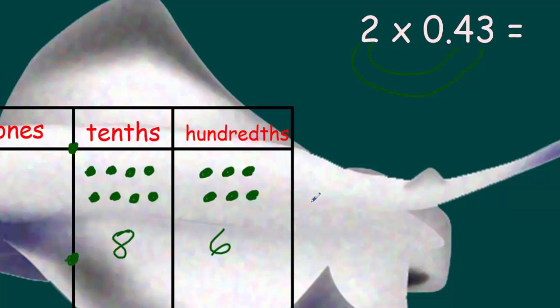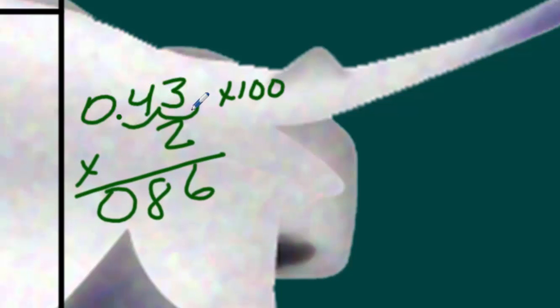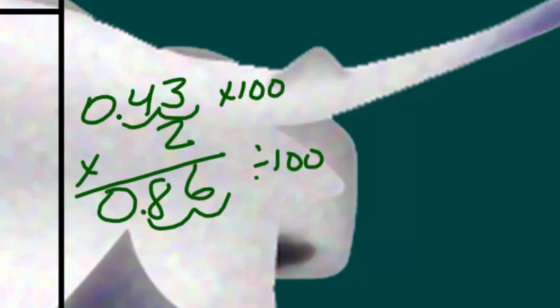Now let's go ahead and do our algorithm. We have forty-three hundredths times two — we line up our digits, not the decimal point. So we have six, then we have eight, and then that is zero. We have two decimal places, so we're actually going to have to multiply by one hundred to move that decimal place out. That means we need to divide by one hundred and put that decimal place in. And as you can see, voilà — and there were no ones, so there's a zero there.